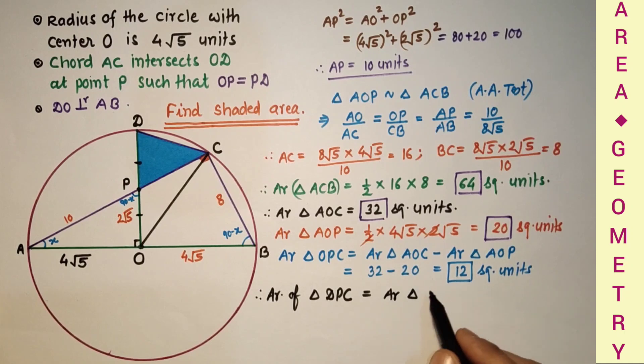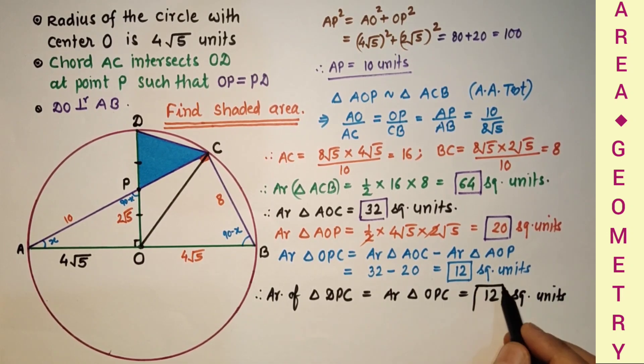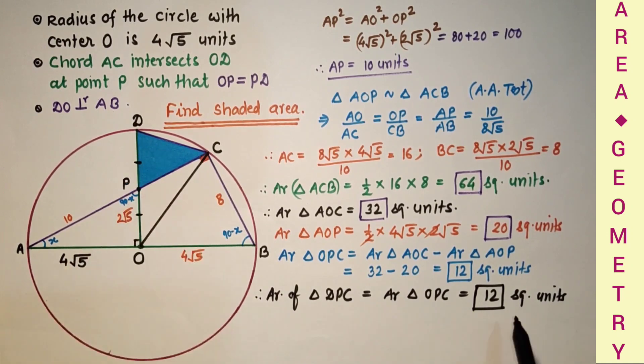And that is 12 square units. This is the final answer. Area shaded area is equal to 12 square units.